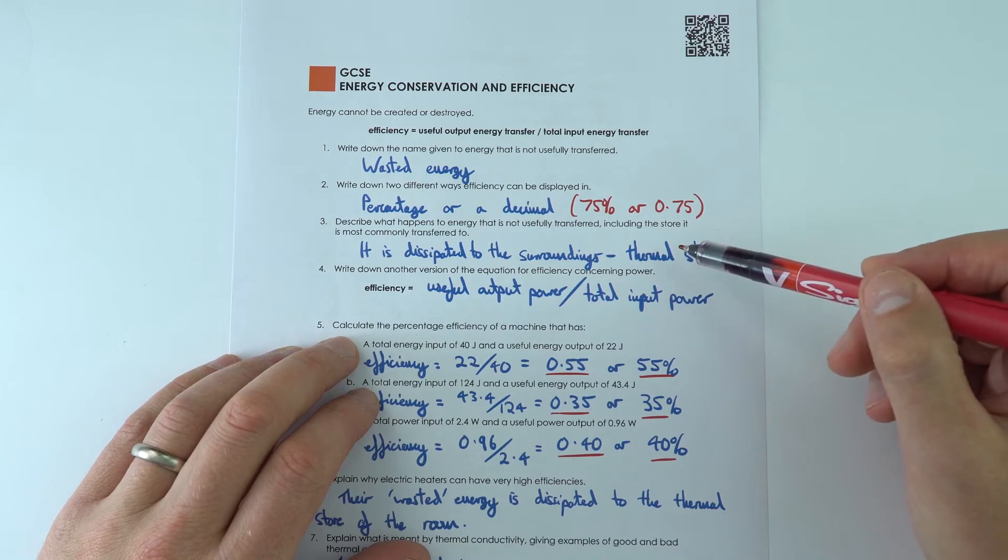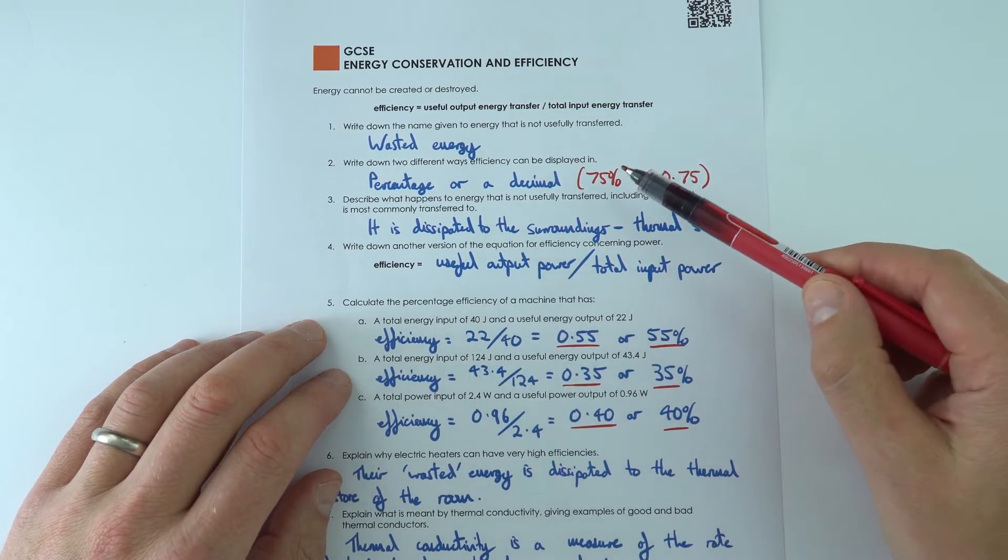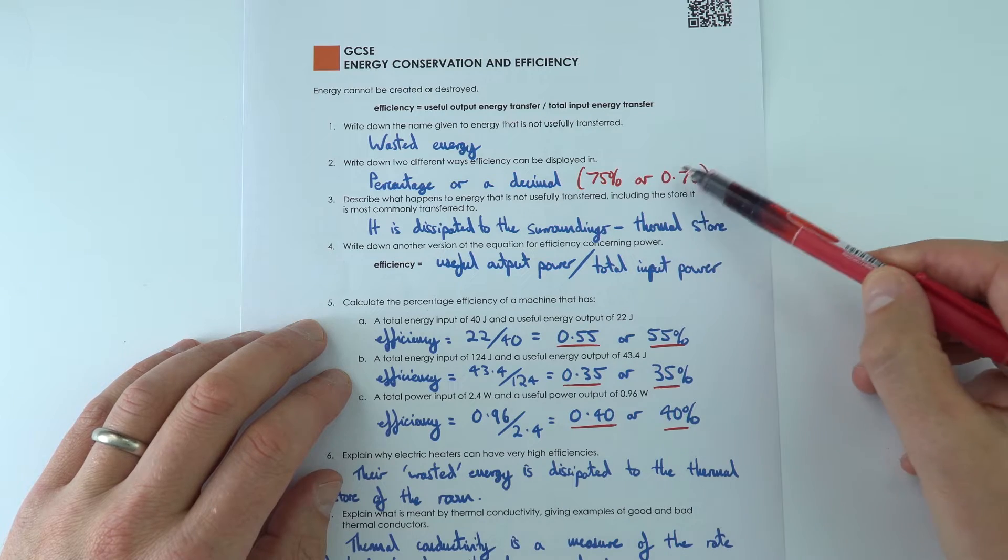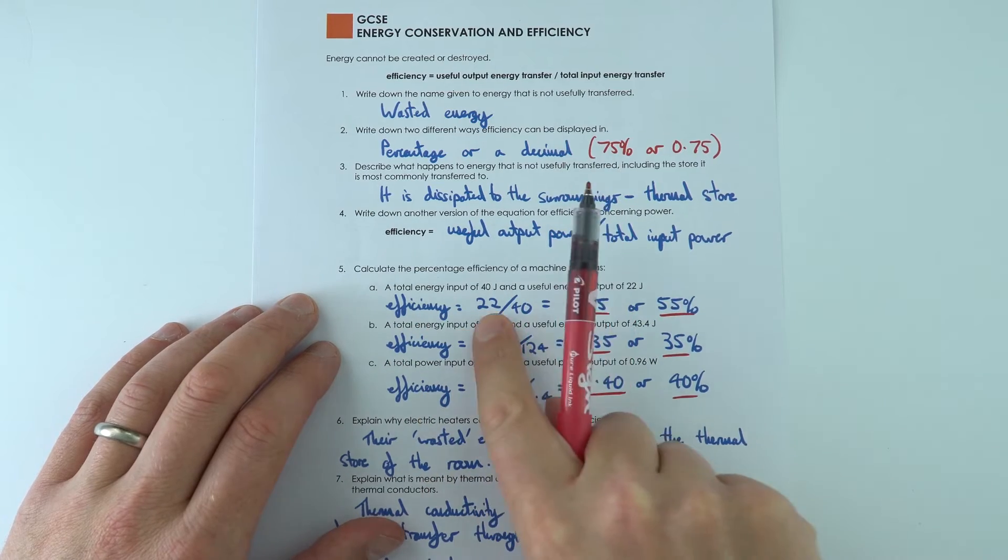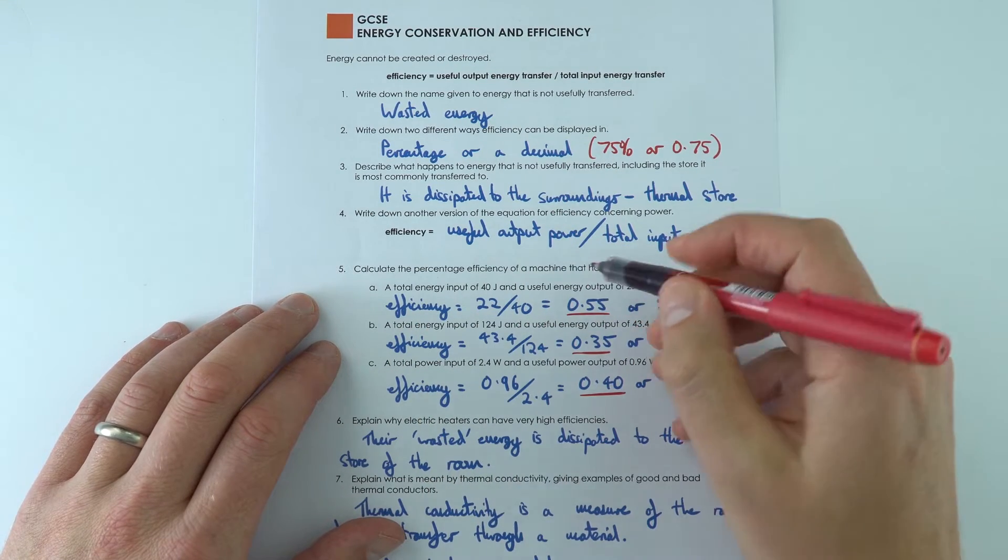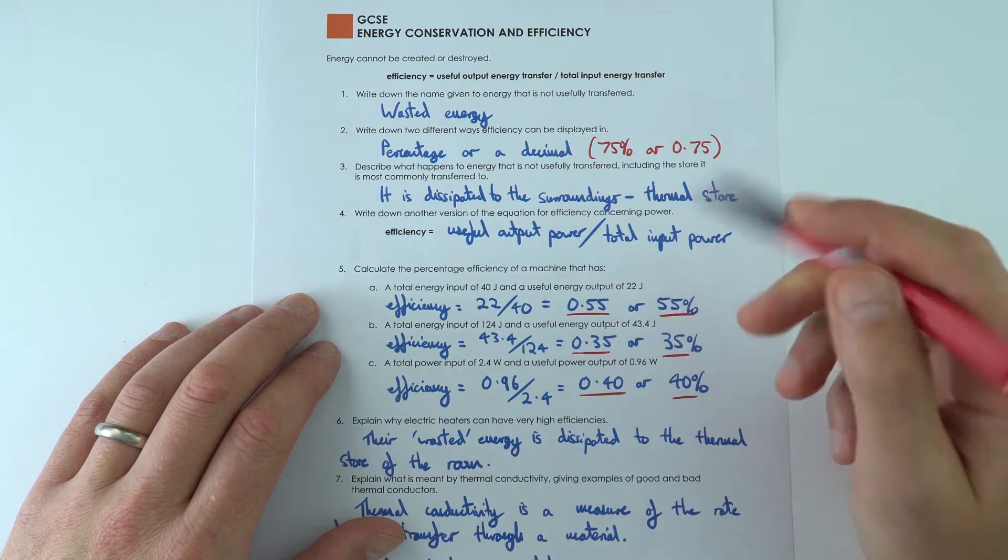The efficiency we can either give as a percentage, as a decimal, and I suppose you could give it as a fraction as well. So for the first one I just worked out what was the output, what was the input, and then I gave my answer both as a percentage or a decimal.